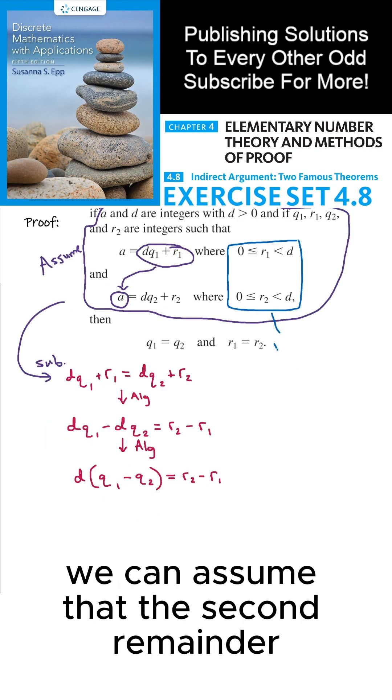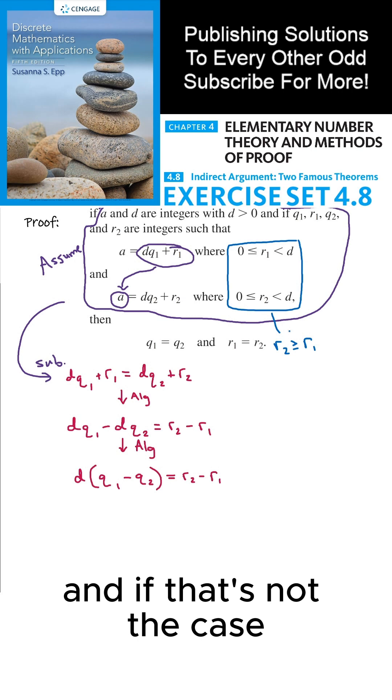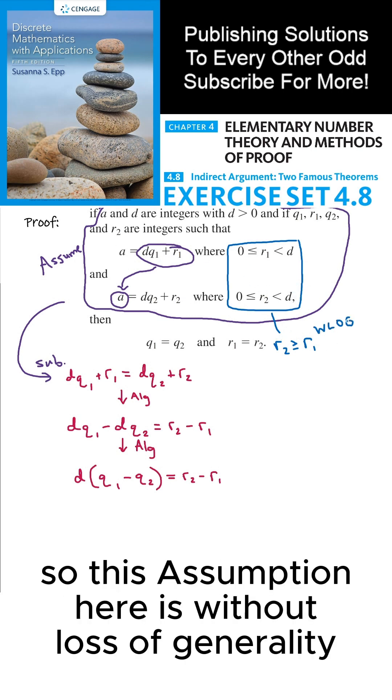Now, without loss of generality, we can assume that the second remainder is at least as large as the first remainder, and if that's not the case, then we can swap the letters around so that this proof works. So this assumption here is without loss of generality.